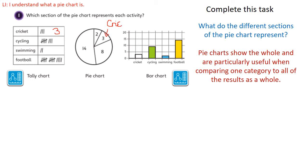Okay let's go back to the tally chart here and have a look at the cycling. We've got eight people who did cycling. So where is that on the pie chart? We can see that here is eight, so therefore this section must be cycling.